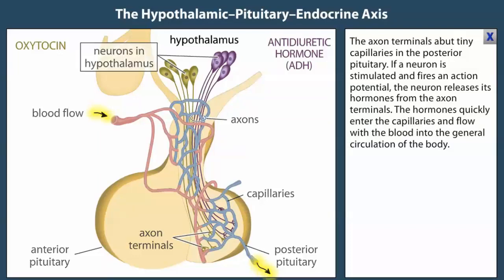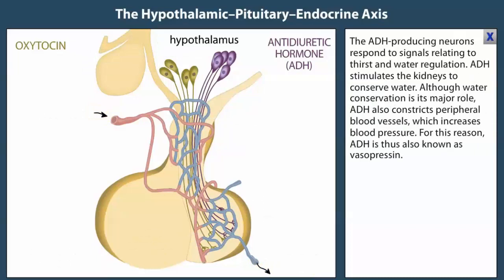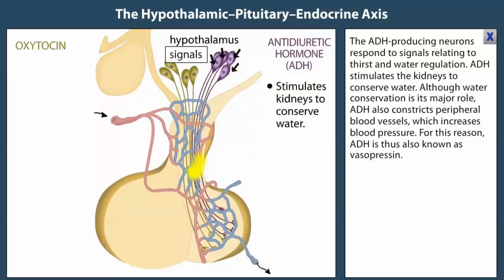The ADH-producing neurons respond to signals relating to thirst and water regulation. ADH stimulates the kidneys to conserve water. Although water conservation is its major role, ADH also constricts peripheral blood vessels, which increases blood pressure. For this reason, ADH is also known as vasopressin.